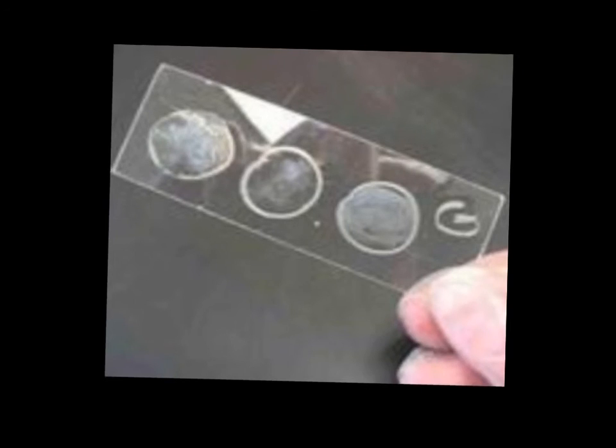And so finally, here we have our bacteria smears that have been heat fixed. We can see that they are present within the wax circles and they are ready to be stained.